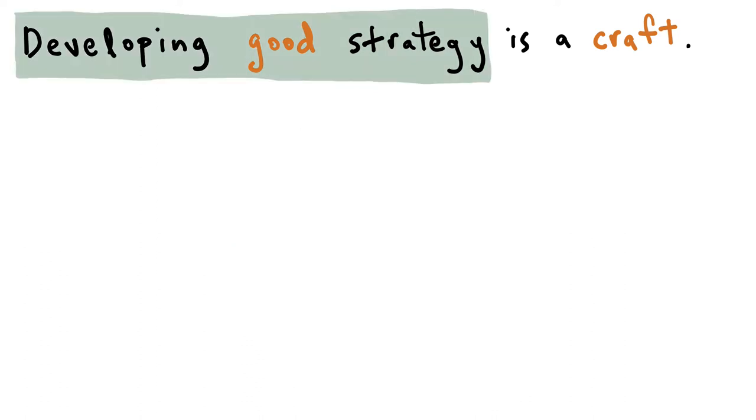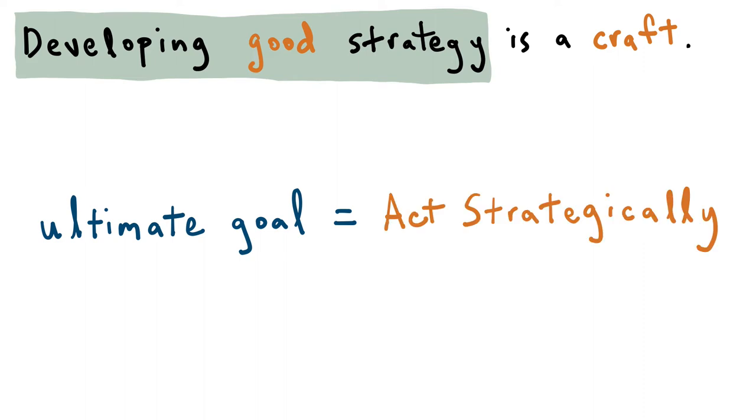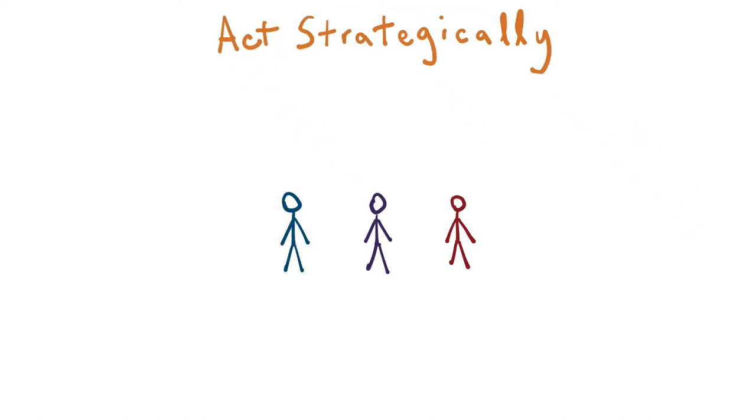How do you develop a good strategy? First, remember that the goal of a strategy isn't to have a strategy—it's to act strategically. You want to achieve your vision in a way that's consistent with your values. You want to move from a place where everyone is operating on their own individual assumptions to one where everyone has a shared understanding.